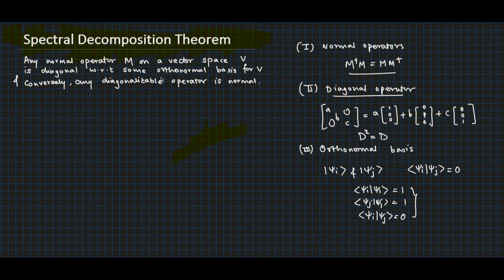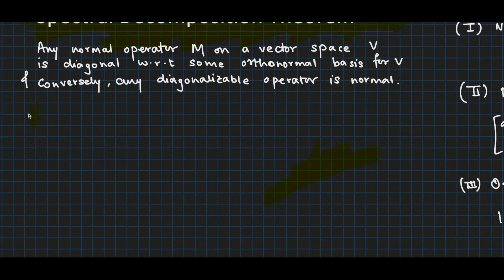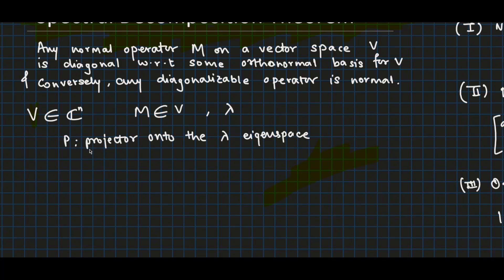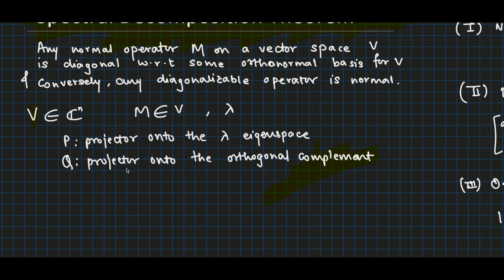Now let's prove the spectral decomposition theorem. Let V be an n-dimensional complex vector space and let M be a normal operator on V. Let lambda be an eigenvalue of M, let P be the projector operator onto the lambda eigenspace, and let Q be the projector operator onto the orthogonal complement V-perp.